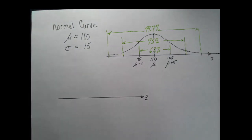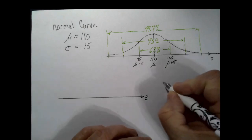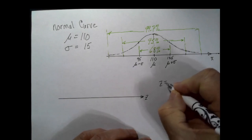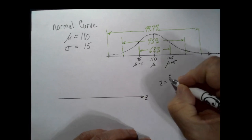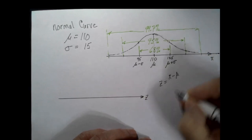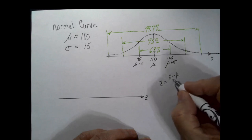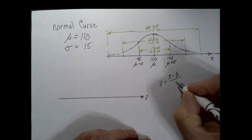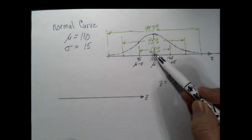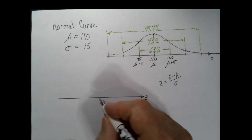A z score is how many standard deviations a point is away from the mean. The z score is calculated as the number of standard deviations an x value is away from the mean: x minus mu is how far x is away from the mean, either positively or negatively, divided by the standard deviation.